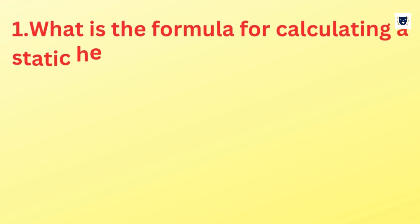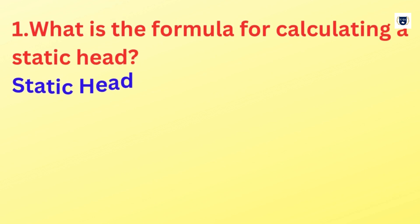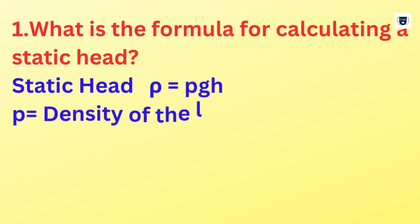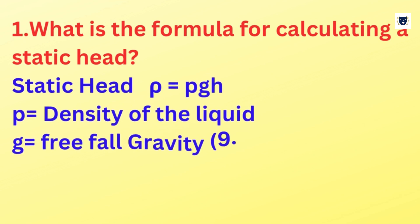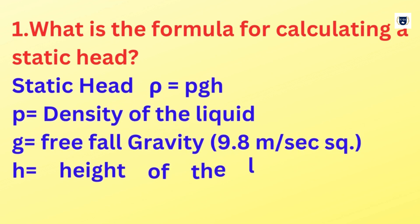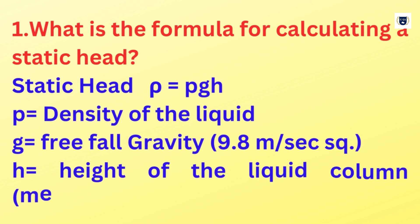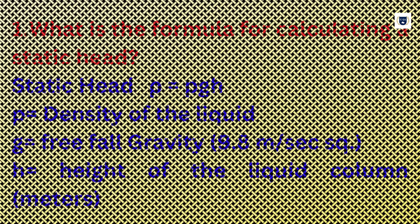What is the formula for calculating a static head? Static head rho is equal to PGH, where P is equal to the density of the liquid, G is equal to free fall gravity, and H is equal to the height of the liquid column in meters.